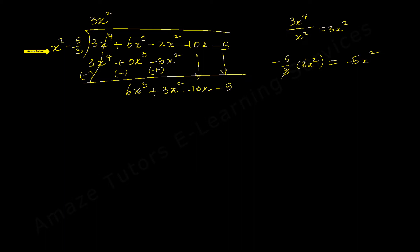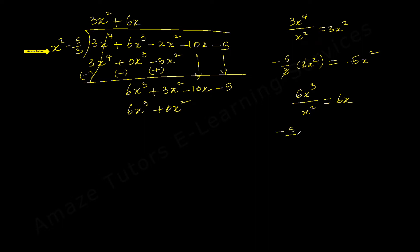Repeat the step: divide the first monomial 6x³ by x², giving 6x as the second term of the quotient. Multiply 6x by the two terms of the divisor: 6x times x² is 6x³, and there is no x² term so write 0x². Then 6x times -5/3 gives -10x. Be very careful with signs here.